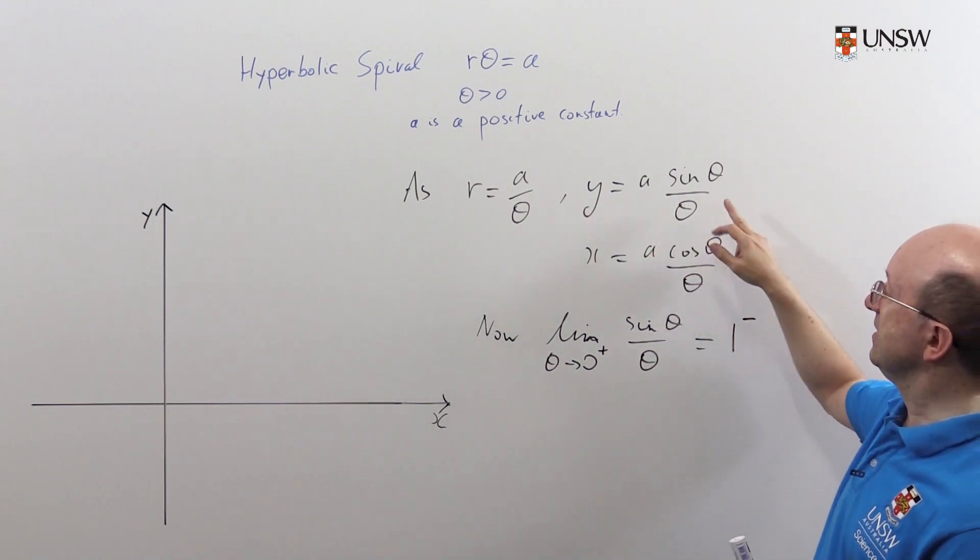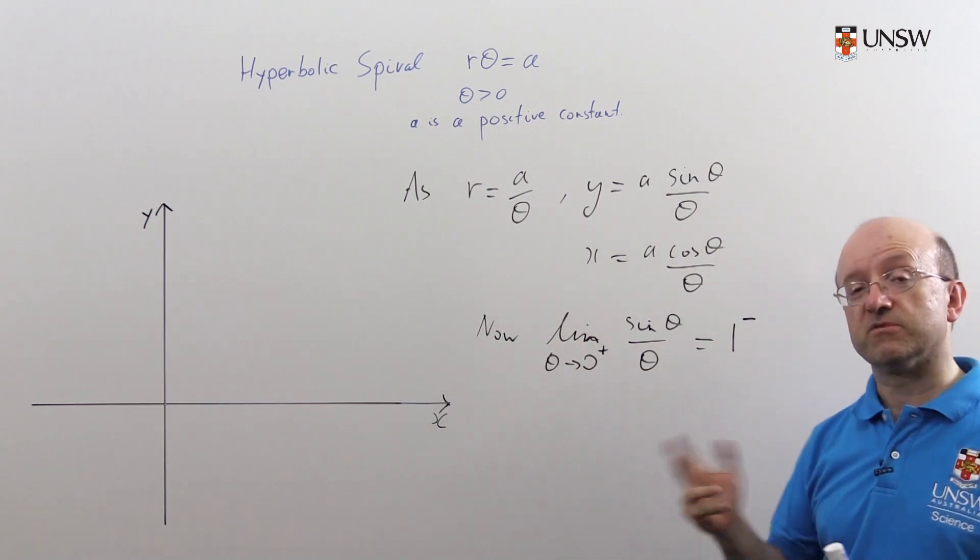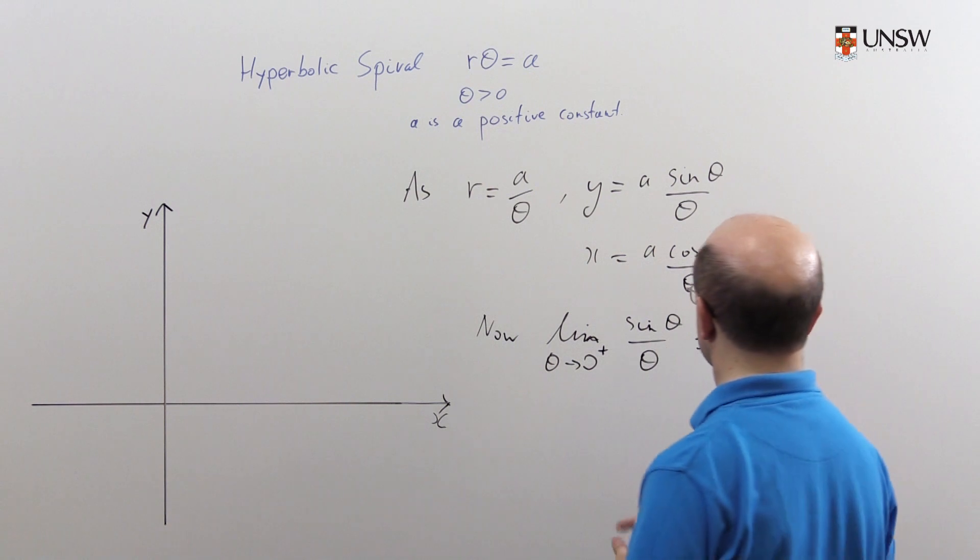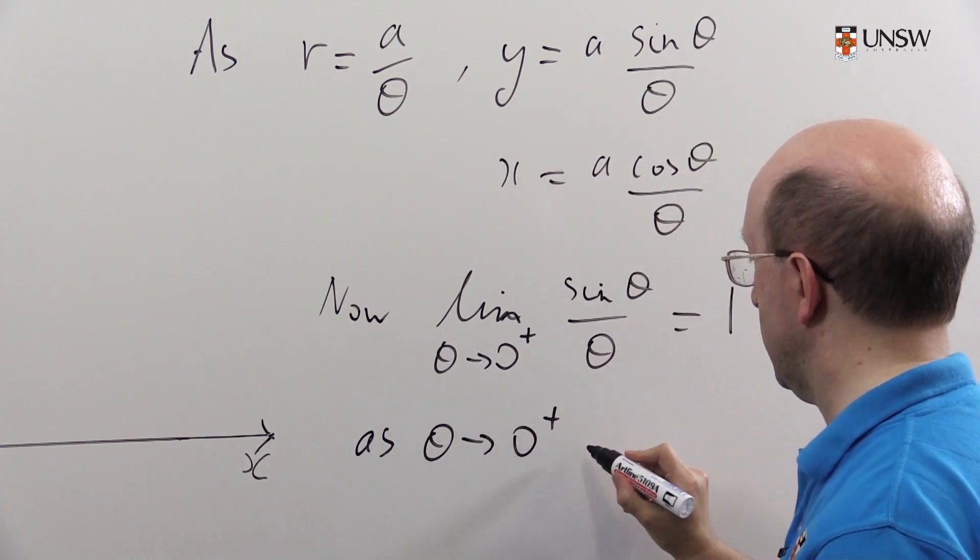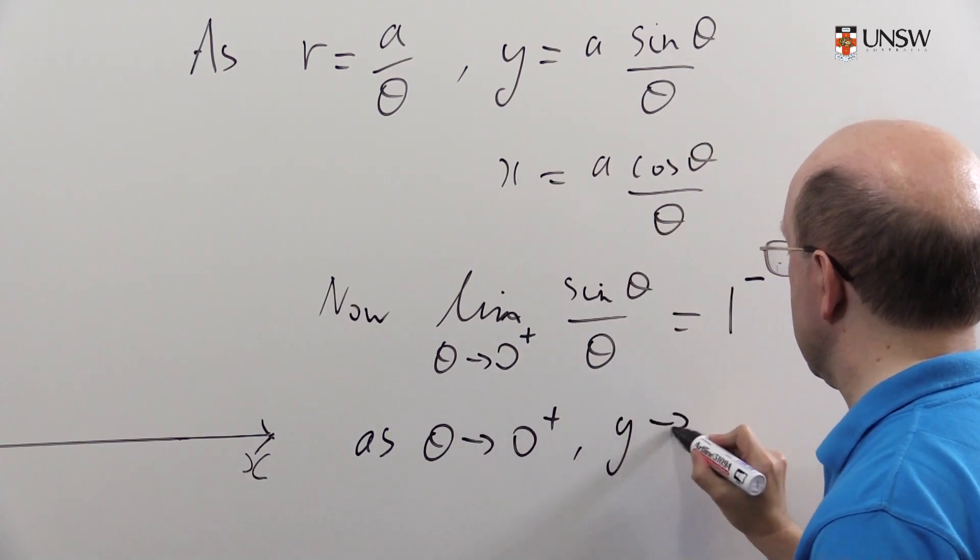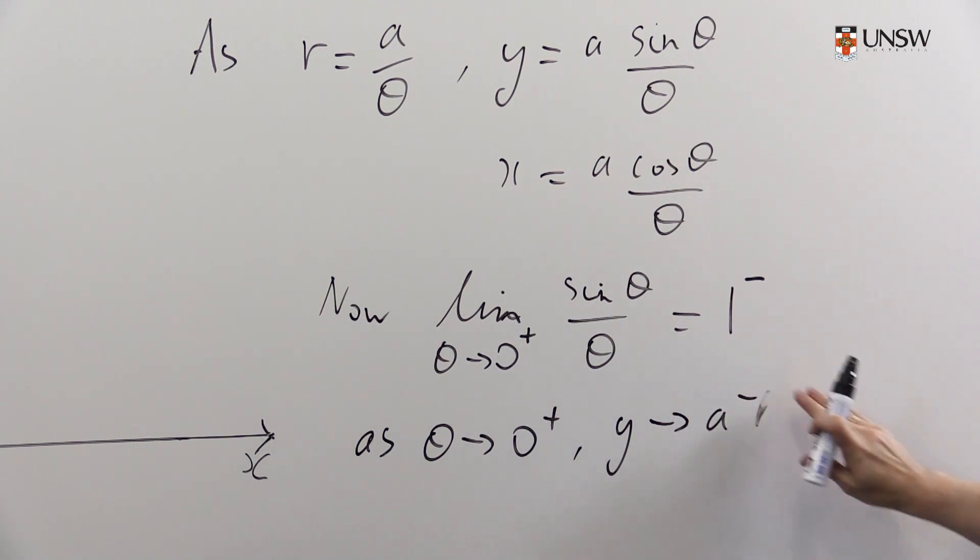So what does this tell us? It tells us as theta goes to zero from above, y will tend to a and it will tend to a from below. Since that limit is true, as theta goes to zero from above, y goes to a from below.